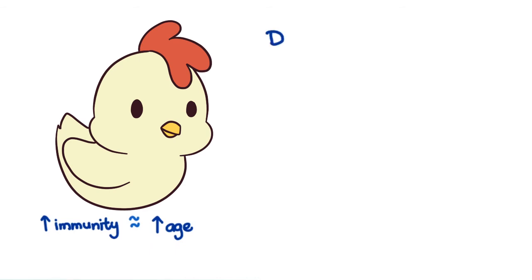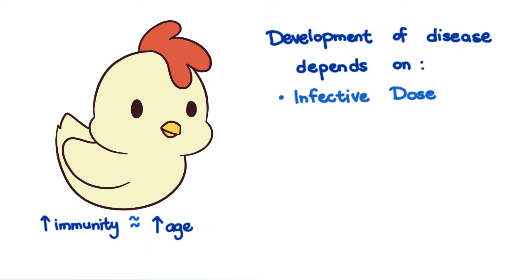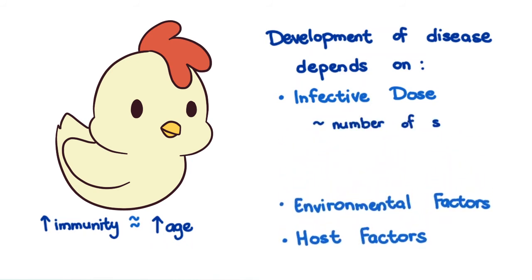Whether or not the chicken develops clinical disease depends on the infective dose, as well as some environmental and host factors. The infective dose is correlated with the number of sporulated oocysts ingested by the chicken.